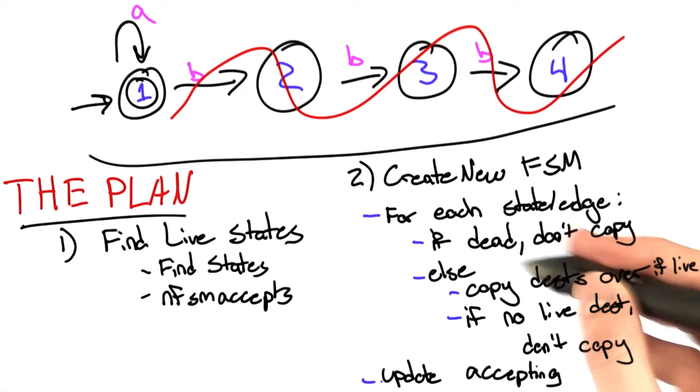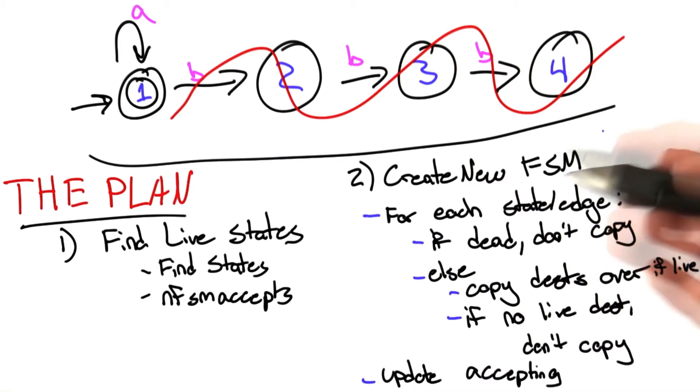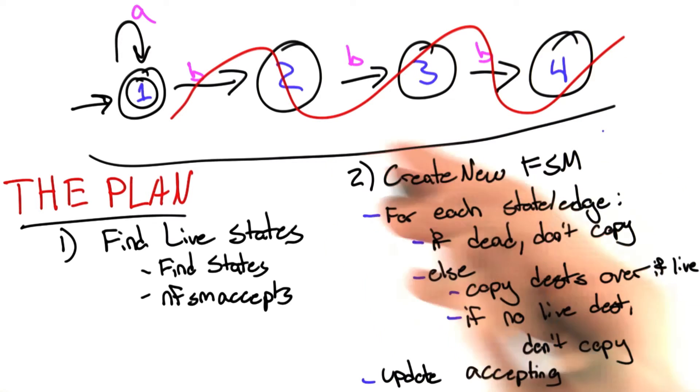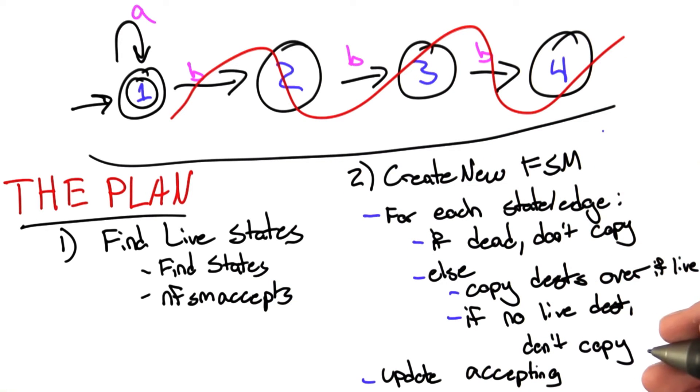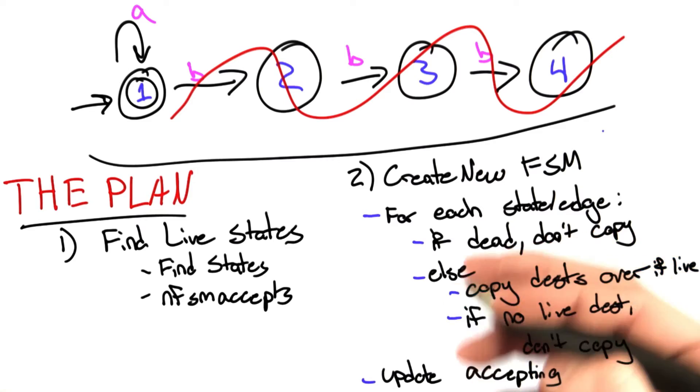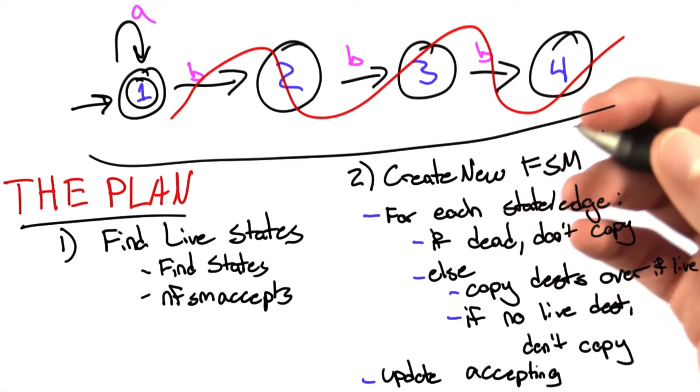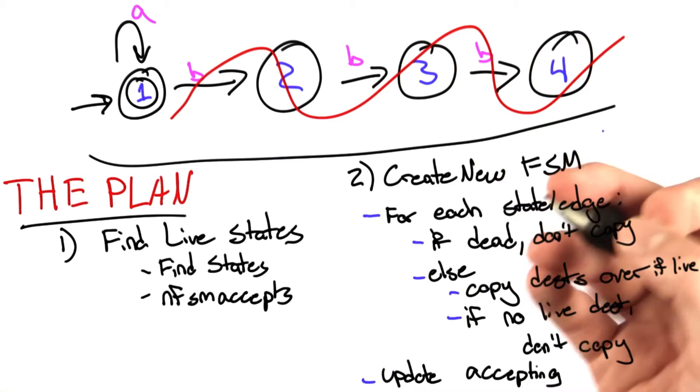So here I have a bunch of little subparts. We're going to go through each edge state, each entry in our dictionary. If the current state is dead, we're not going to copy it into our new finite state machine. Otherwise, we're going to go through all the destinations it had in the original finite state machine, and prepare to copy over any that are still alive.